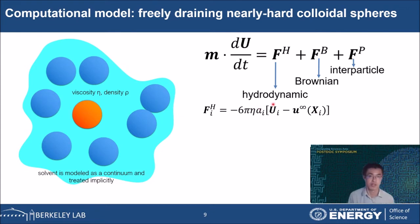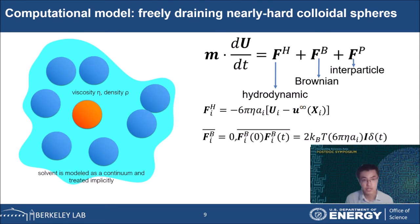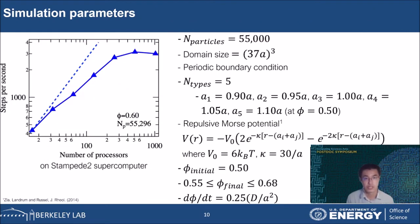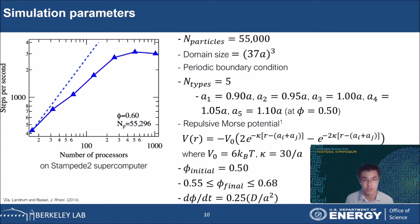Brownian force can be derived from classical Brownian statistics. Interparticle force is defined by the derivative of interparticle potential V. Here is a list of simulation parameters. Every parameter is non-dimensionalized by the particle radius a, so it can be generalized to many real systems. We built a periodically replicated system of 55,000 freely draining Brownian spheres in LAMMPS. This number of particles gives good statistical effects on our measurements and further increases in the number of particles do not change the results.